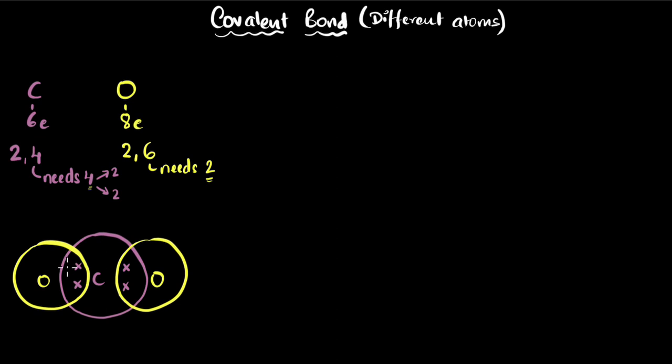What about oxygen? Oxygen shares only two. So this oxygen will share only two. And since this is a different atom, we're going to show a different symbol, dot, to represent its electrons.